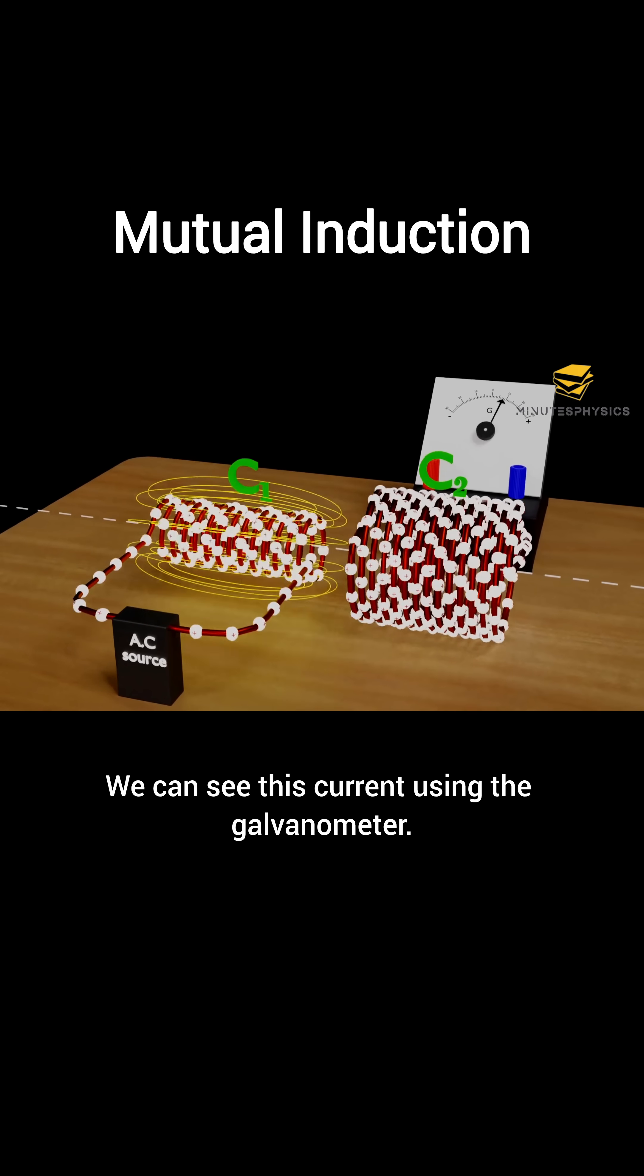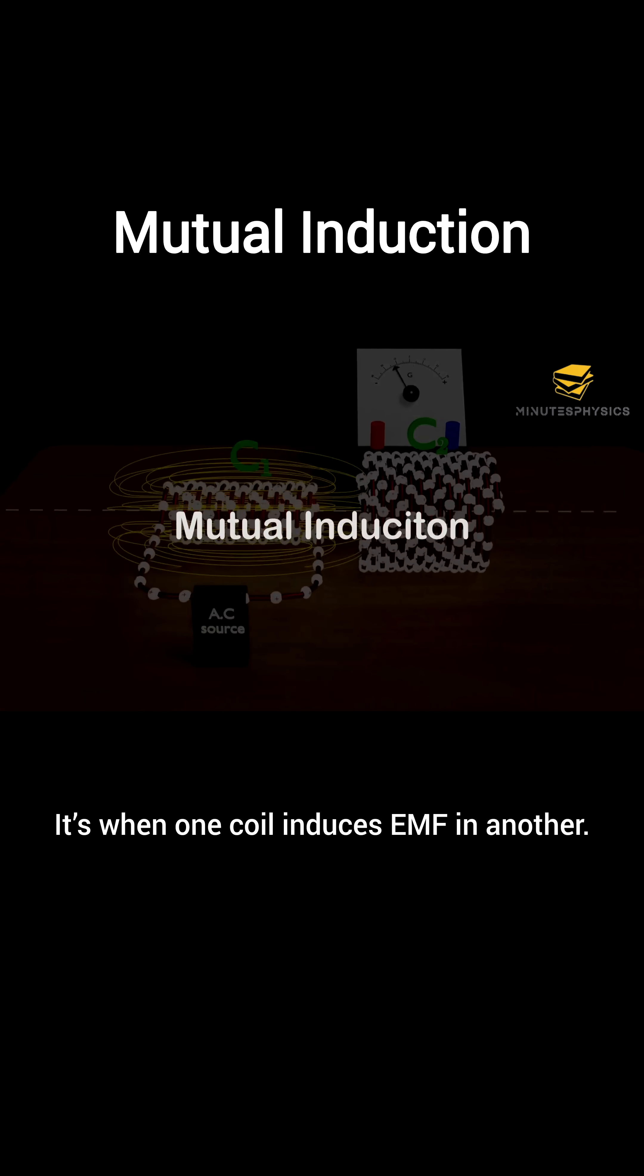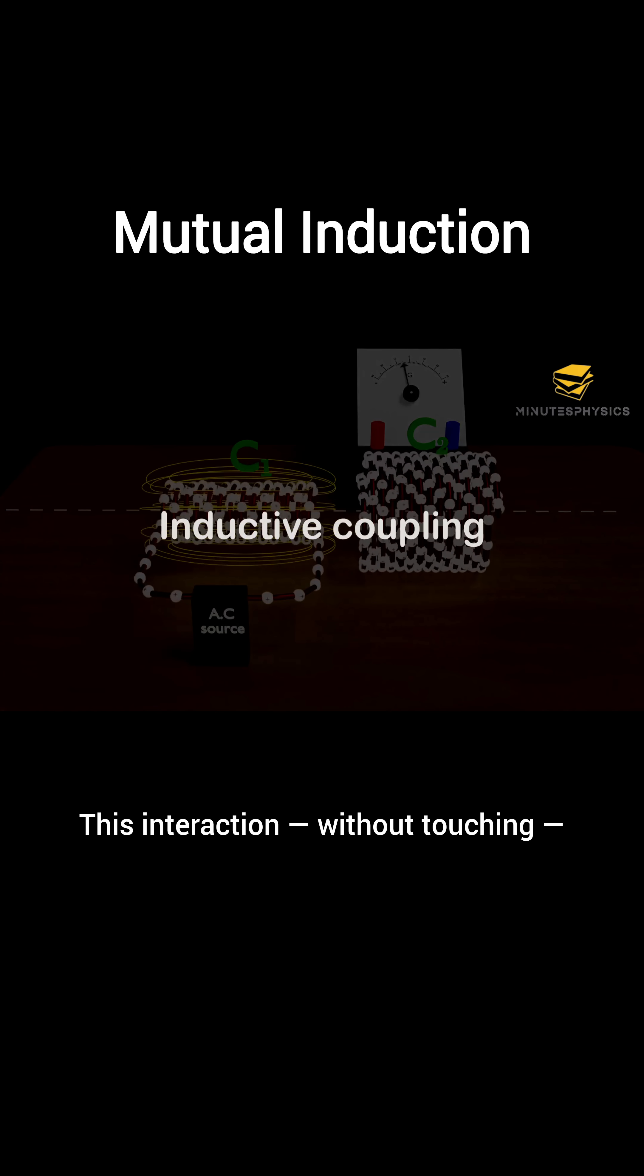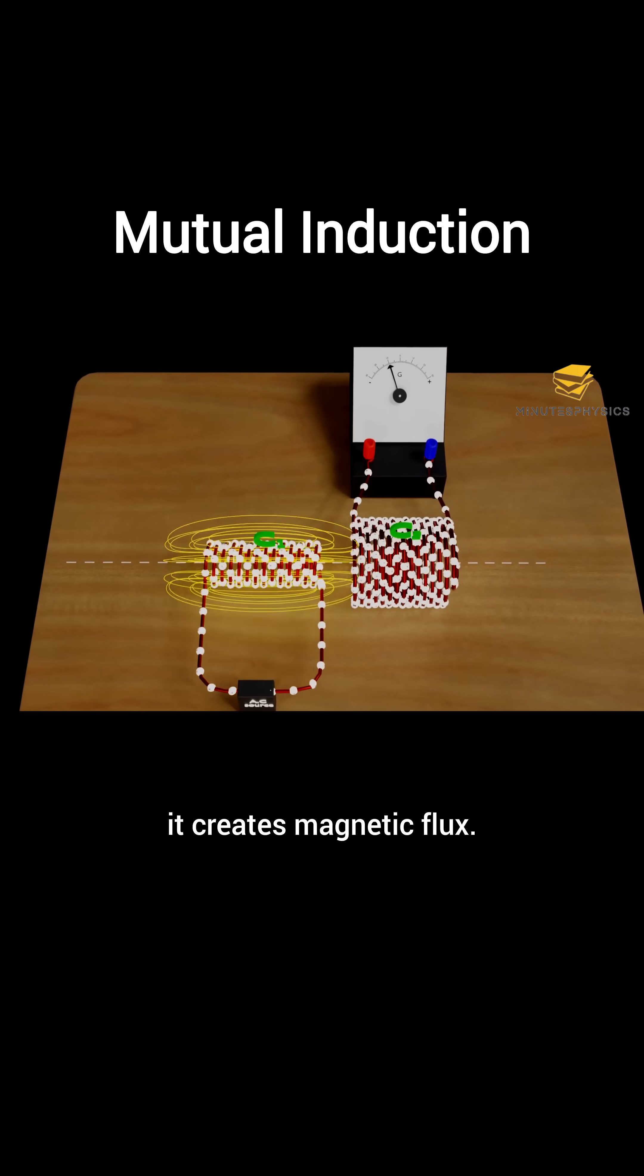But it opposes the change according to Lenz's law. We can see this current using the galvanometer. This is called mutual induction. It's when one coil induces EMF in another. This interaction without touching is called inductive coupling. When current in C1 changes, it creates magnetic flux.